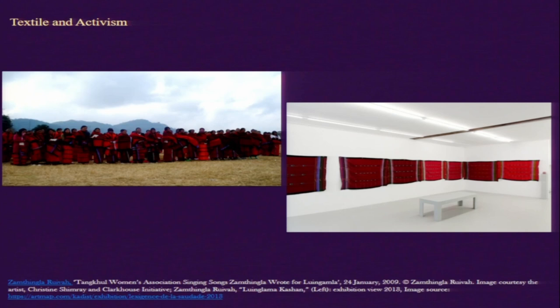The Luingamla kashan is characterized by this red color, with variations in red. There are vertical strips on both sides of this kashan and horizontal parallel lines — usually four sets of horizontal lines passing through the kashan. This is a textile she started making to commemorate the death of Luingamla. At the same time, it is not just about commemoration but about remembering the resistance, valor, and courage of this woman, and how she was attempted to be subjugated by the authority.